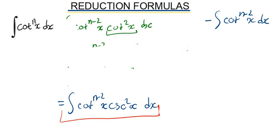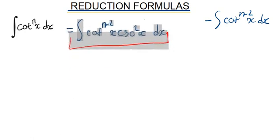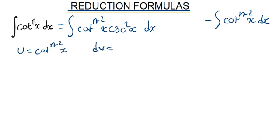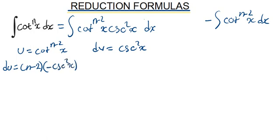We need to determine which one we are going to use as our u and which one we are going to use as our dv. We are going to let u = cotangent^(n-2)(x), and dv = cosecant²(x) dx. Meaning our du will be equal to (n-2) times the derivative of cotangent, which is minus cosecant²(x), times cot^(n-3)(x) dx. And our v will be equal to the integral of cosecant²(x), which is minus cotangent(x).